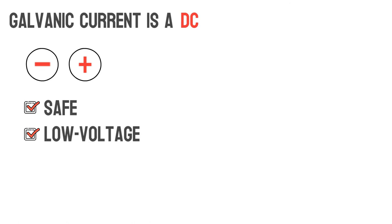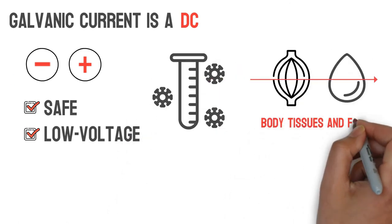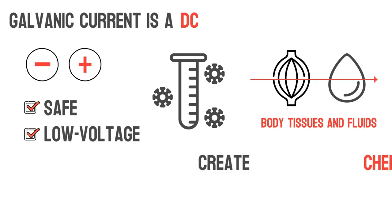Galvanic current is a direct current using a negative and positive pole that is reduced to a safe low voltage level. Galvanic current produces chemical changes when passed through body tissues and fluids and is used to create chemical and ionic reactions in the skin.